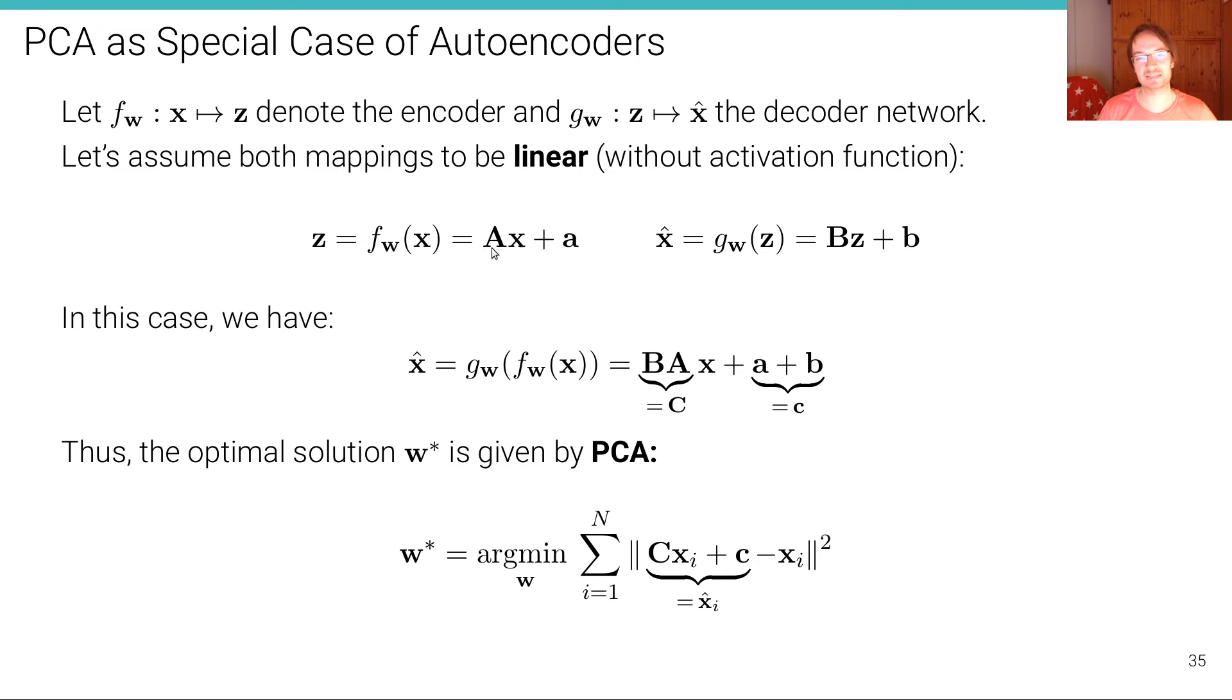So in other words, we have z equals Ax plus a, and x hat, the decoder result is Bz plus b. Then in this case, the entire mapping here becomes linear. I plug in z into this expression here. So I get BAx plus Ba plus b. So we can replace this with another matrix C. So we have a linear mapping Cx plus c.